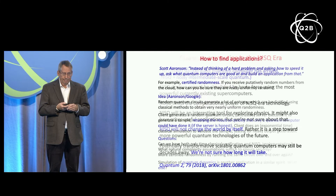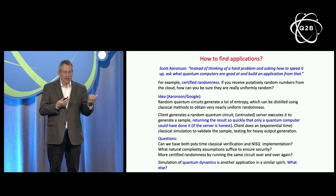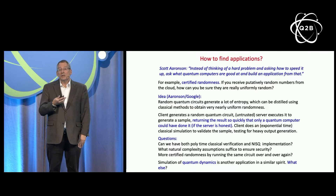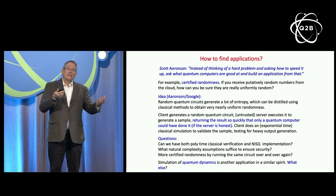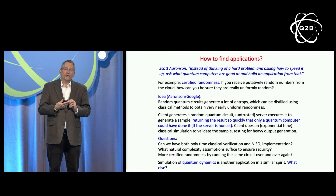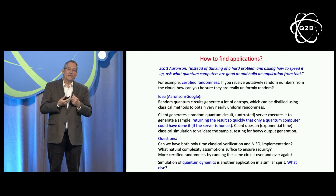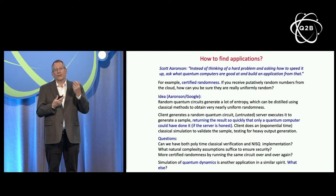So how should we find applications? One approach is to follow Scott's advice: instead of thinking of a hard problem and asking how to speed it up, ask what quantum computers are good at and build applications from that. His specific suggestion was certified random number generation. If we access putatively random numbers on the cloud, how can we be sure they're really random? One idea is that a client can create a random quantum circuit and demand the server execute it so rapidly that no classical computer masquerading as a quantum computer could do it.